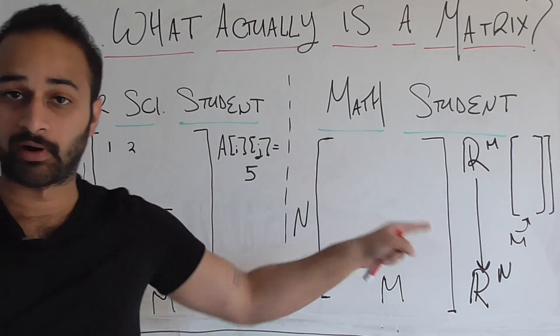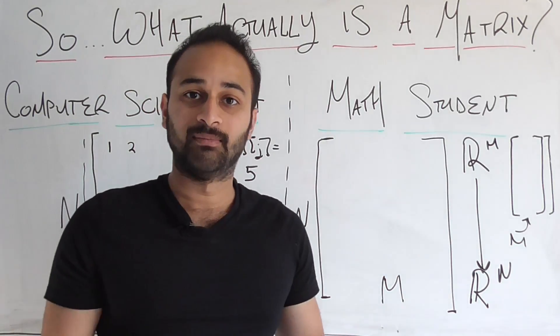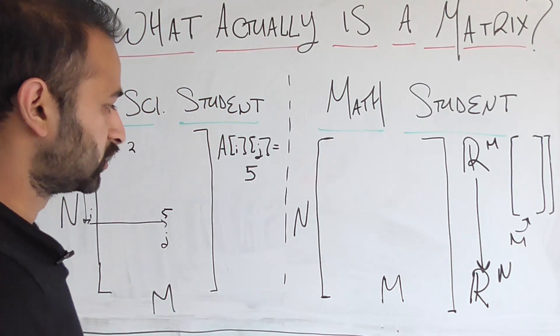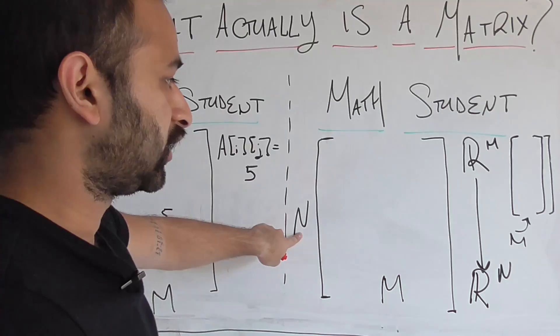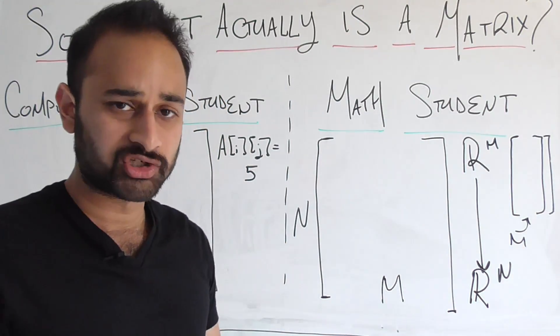So this has n different components in that vector. n can be bigger than m, it can be the same, it can be smaller, it doesn't really matter. So the job of this matrix is to take a vector in R^m and map it to a vector in R^n. And how does it do that?